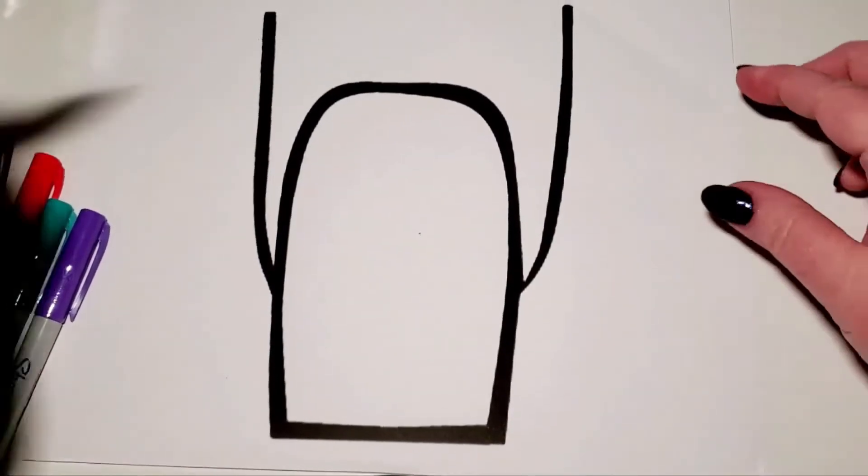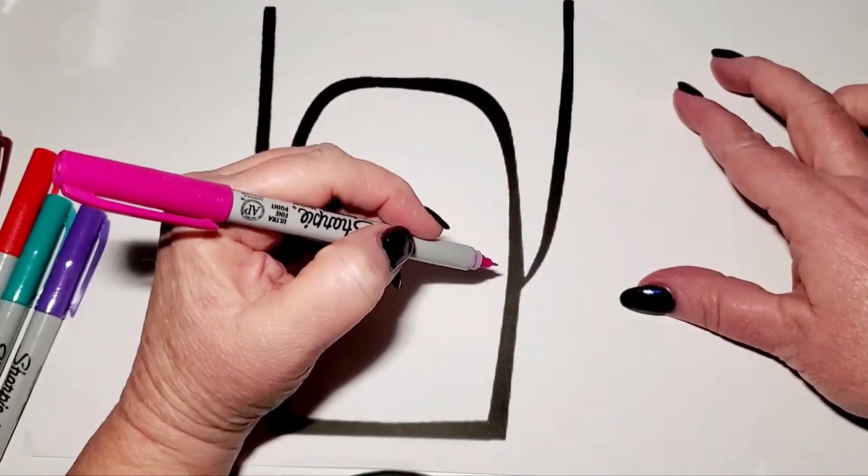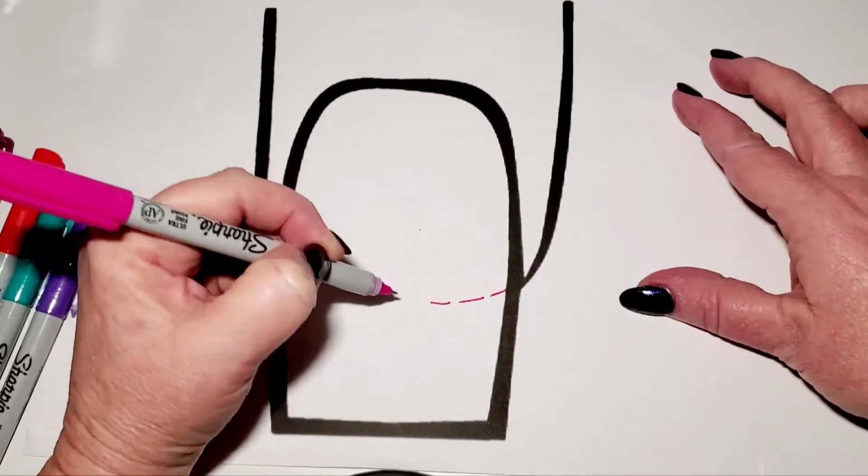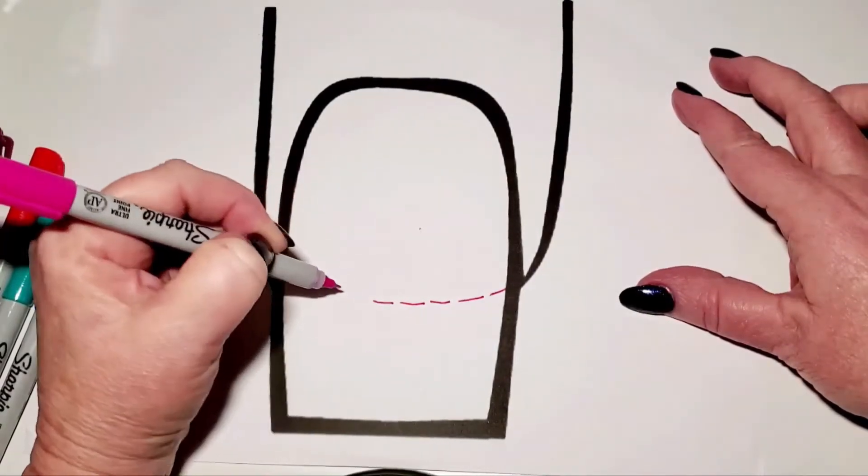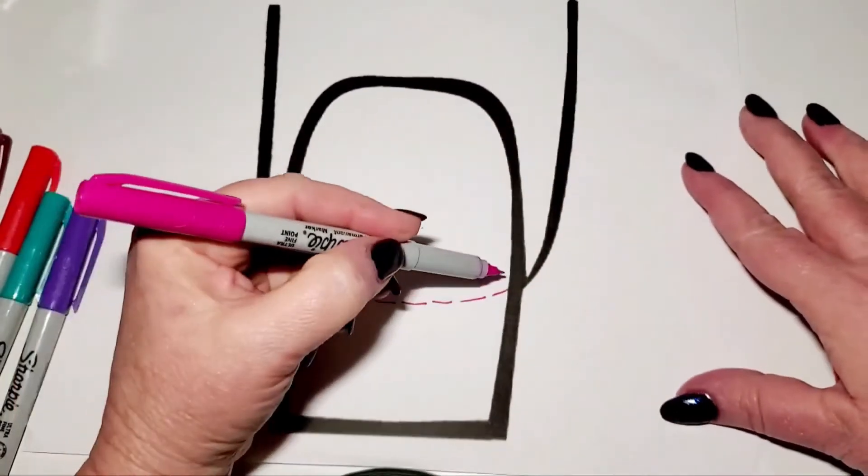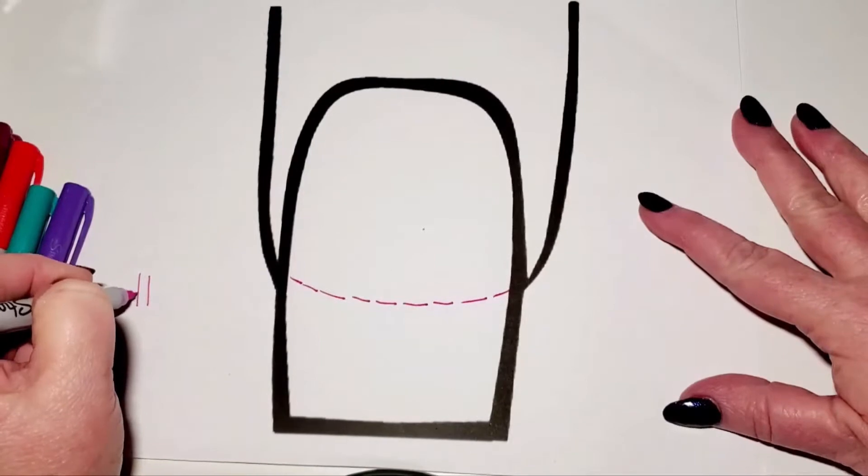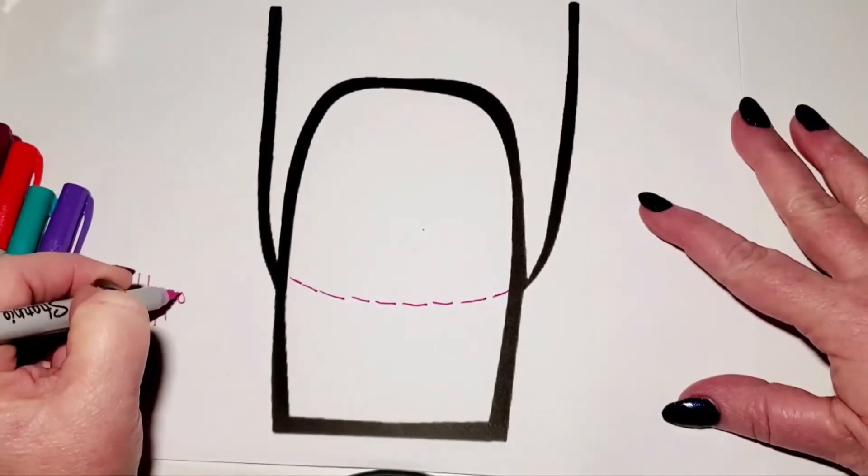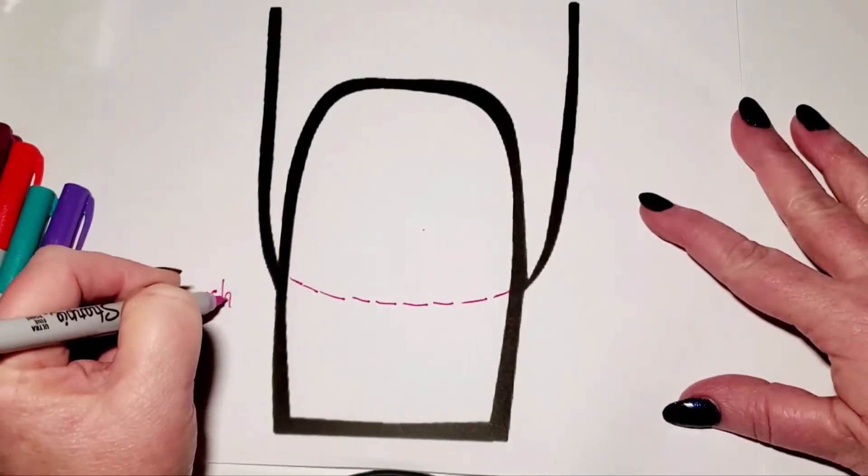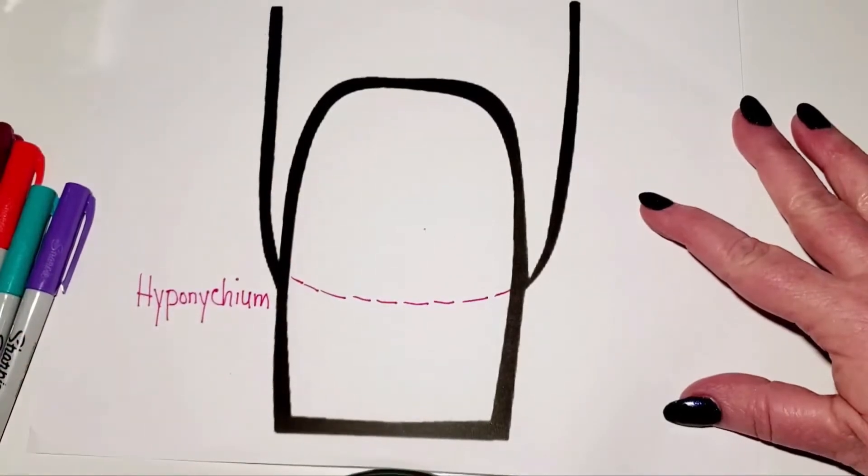One of the first things I'm going to tell you about is the hyponychium. The hyponychium is what most people call the quick, so this little dotted line here is that area right underneath your nail right there. That's called the hyponychium, H-Y-P-O-N-Y-C-H-I-U-M.